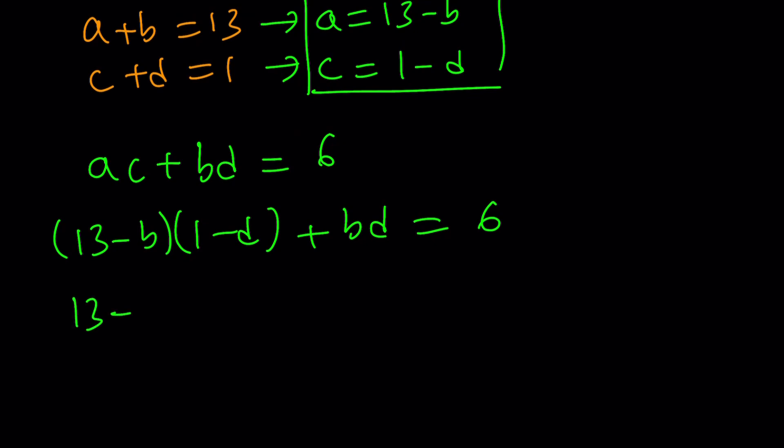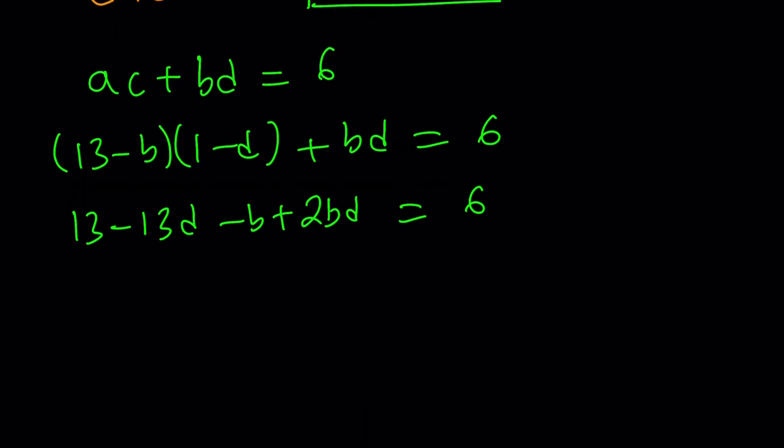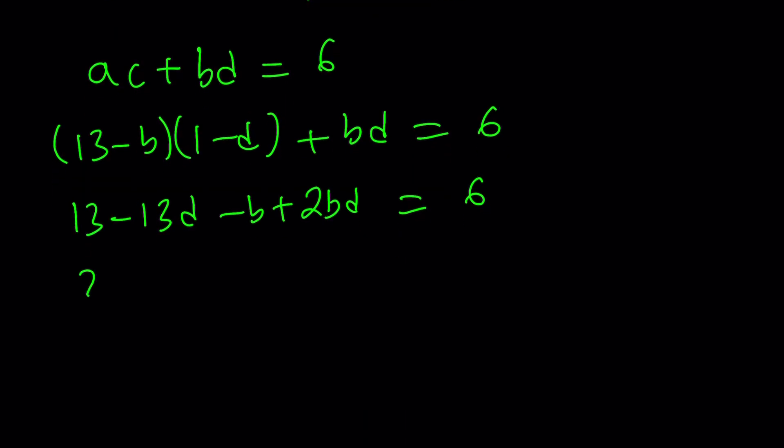(13 - B)(1 - D) + BD = 6. So 13 - 13D - B + BD. Plus BD, that's going to make 2BD. 2BD or not 2BD. That didn't work. It should be 2B. So, we got this. Let's go ahead and organize this a little bit. I'm going to write the 2BD first, and then followed by -B - 13D, and then 13 - 6 is going to give me 7.